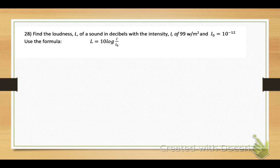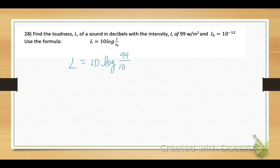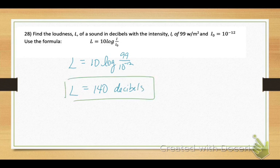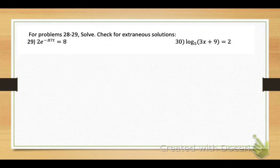Number 28: find the loudness L of a sound in decibels with intensity I of 99 watts per meter squared, where I-sub-zero equals 10 to the negative 12. The formula gives L equals 10 times log of (99 over 10 to the negative 12). Plug that straight into your calculator — this sound is very loud at 140 decibels.